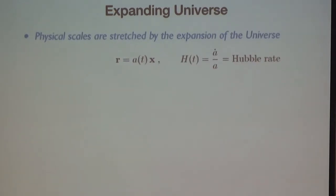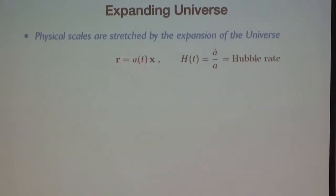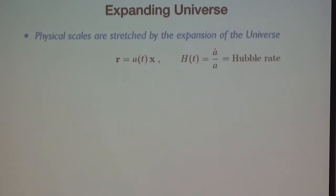Because of the cosmological principle, this expansion occurs everywhere in the universe — it is homogeneous and isotropic. All physical scales are being stretched by the expansion of the universe, so we need a spatial coordinate system to describe this effect. We write physical scales R as a scale factor — which describes the isotropic expansion — times a comoving position. The fundamental coordinate in an expanding universe is this comoving position X.